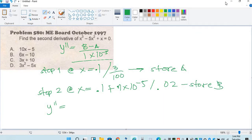Y double prime using calculator technique is negative 9.39, store it to C. Now, to find the answer, we will find this value using calc function of the calculator.